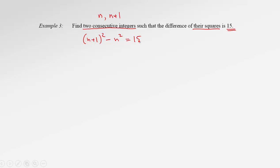Okay, that's our equation. Now what's left to do is just to solve it. In order to solve it, we need to raise to the square using perfect square formula. So we get N square plus double the product 2N plus 1 minus N square equals to 15.